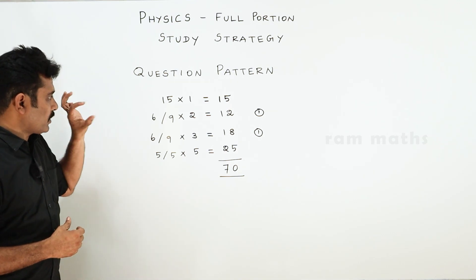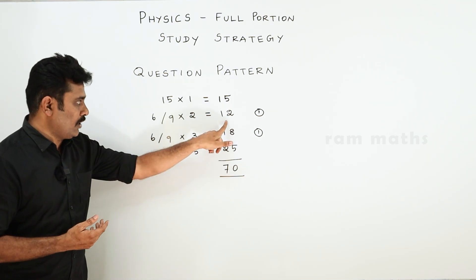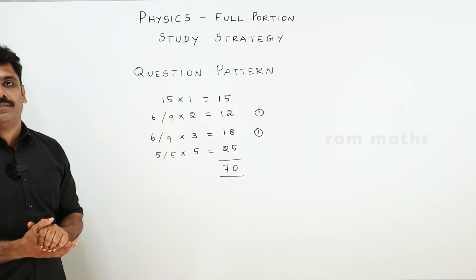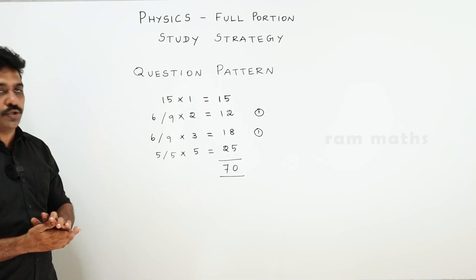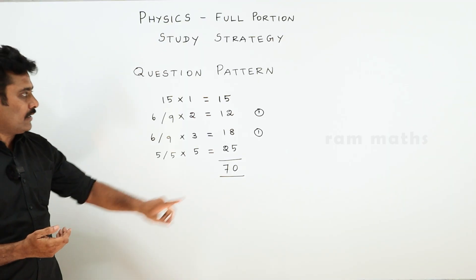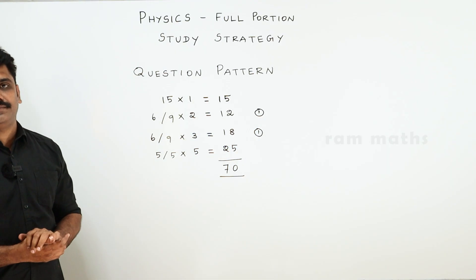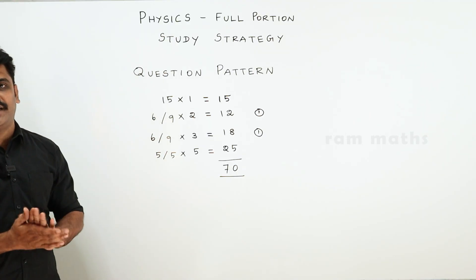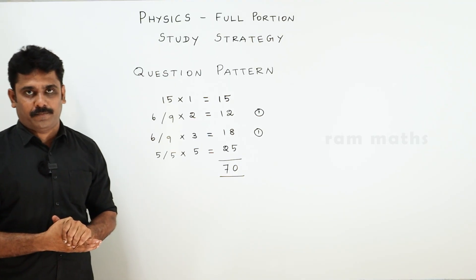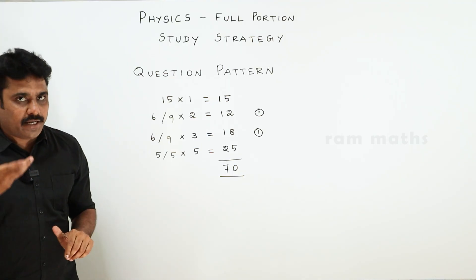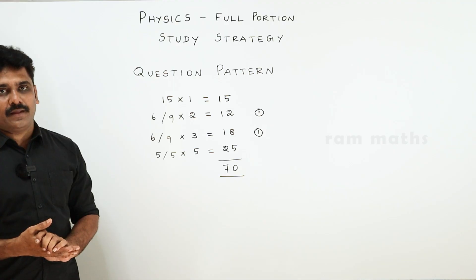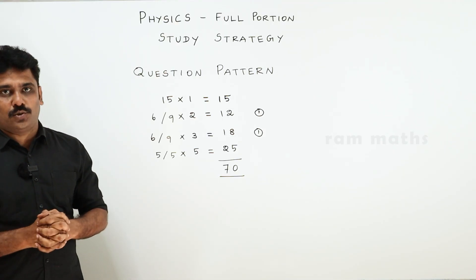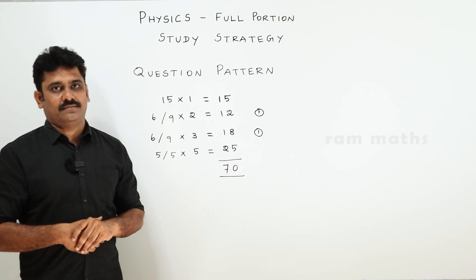Next is Part 2. You have 2-mark questions — actually 12 marks total. You have 9 questions; you answer 6 questions out of 9. One question is compulsory. From the remaining 8 open-choice questions, you answer 5. The compulsory question may be a problem or a reasoning 'why' question.